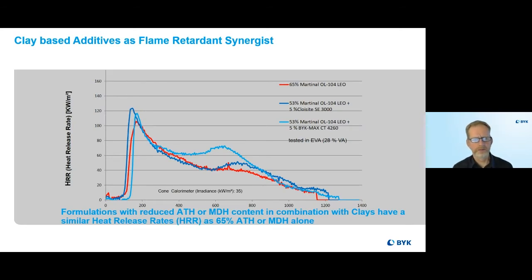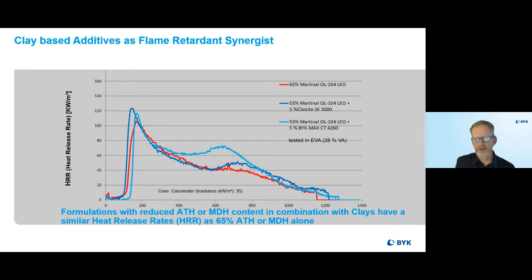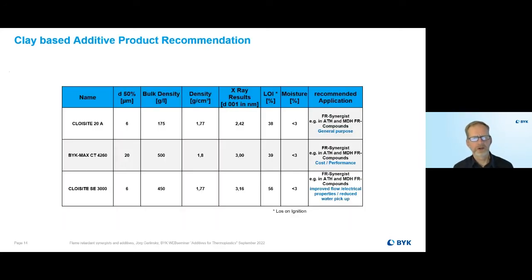This chart shows the heat release rate of such formulations. The red curve shows heat release in kilowatt per square meter from a cone calorimeter test. The red curve represents a 65% ATH EVA formulation with a peak heat release. When using 5% clay — two different types were tested, the CloisiteSA 3000 type and the BYK-MAX CD 4060 type — while lowering the ATH amount, we still achieve a very similar heat release rate, demonstrating the synergistic effect of the clay.